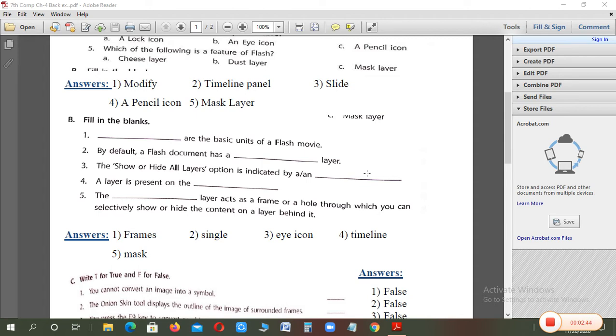By default, a flash document has a blank layer. When we open the flash document, automatically by default, there are how many layers? So single layer is the answer. The new layers we have to insert.